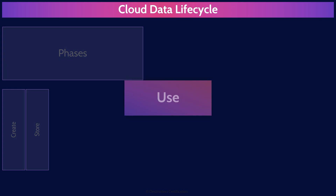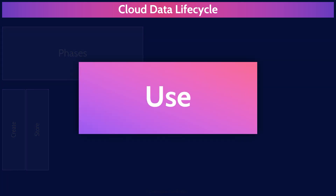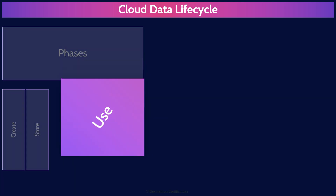Phase three is Use. This is where the data is actively accessed and used by applications or users. This involves reading, updating, and processing data. When changes are saved, that brings us back to the Create phase.